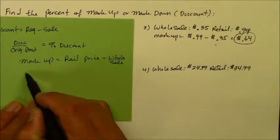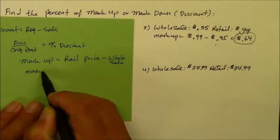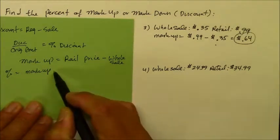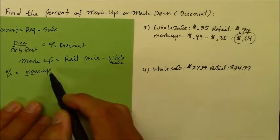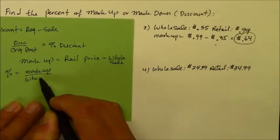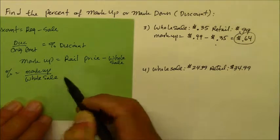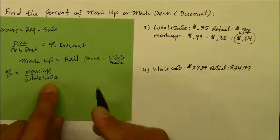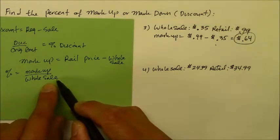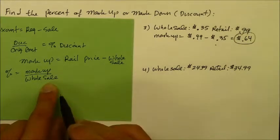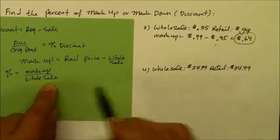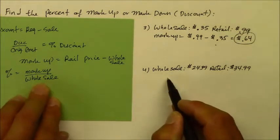Now what do you do with that markup? You take that markup amount to find the percent. You take that markup and divide it by the wholesale, what you paid originally. Because what you paid originally, you add up the markup to it. So you're going to multiply the quotient.